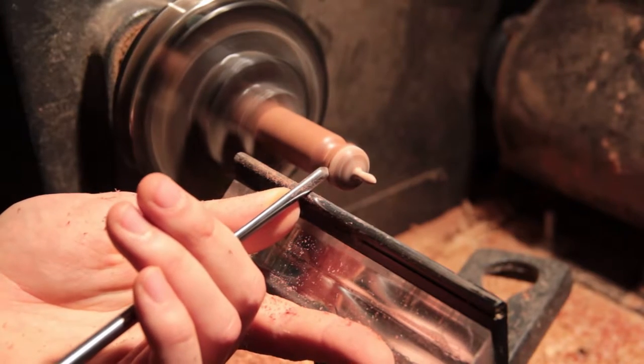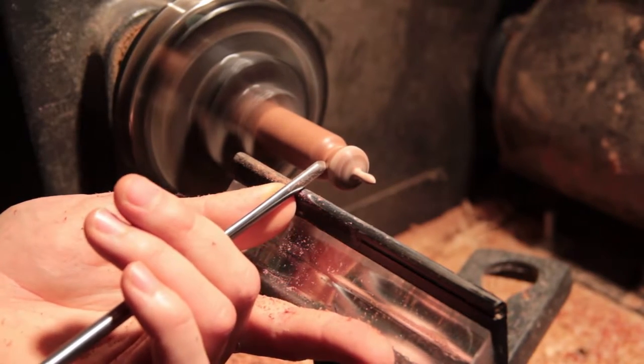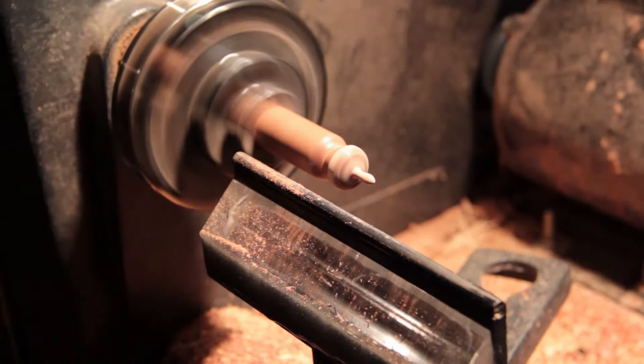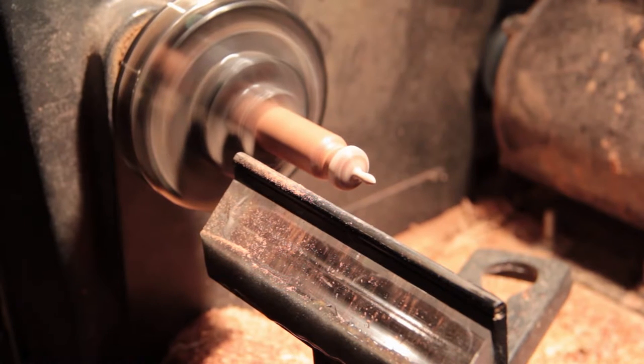So you see now I'm coming in again with the detail gouge and roughing out the lower surface at the top, and then removing some extra waste wood on the bottom so that I have room for the chisel to clear in when I have to make the final cuts there.